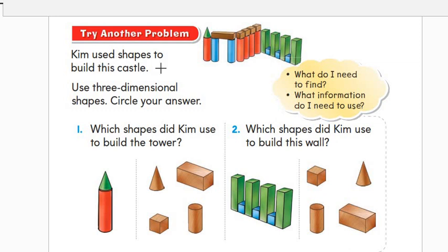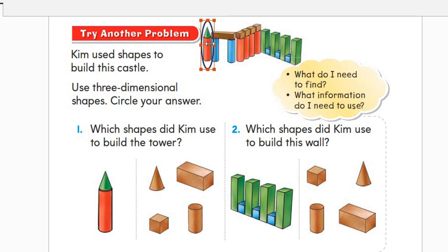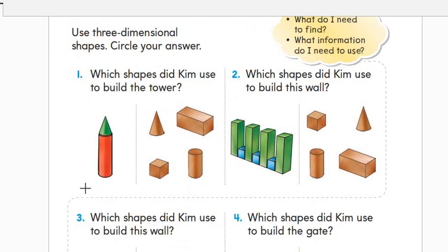Kim used shapes to build this castle. This is the castle that Kim built using three-dimensional shapes. Circle your answer. Number one: which shapes did Kim use to build the tower? This is the tower. Let us have a close look — it has a cone and a cylinder. So he chose the cone and cylinder to build the tower.